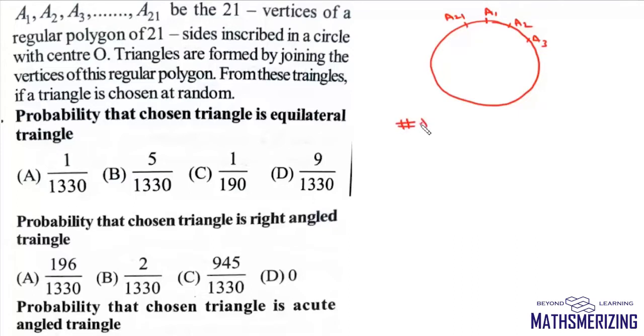Now total number of triangles that can be formed is given by 21C3, and 21C3 is 21 into 20 into 19 divided by 3 into 2. This is 7 and this is 10, so it will be 1330. So total number of triangles that can be formed is 1330.